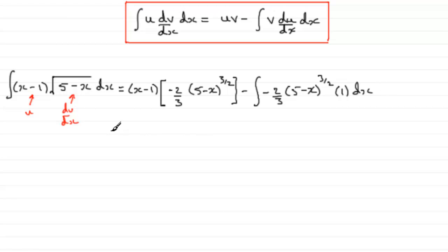Now what I want to do next is just clean this up, clean the first term up. First of all, we've got minus 2 thirds then multiplied by x minus 1 and then multiplied by 5 minus x to the power 3 over 2.